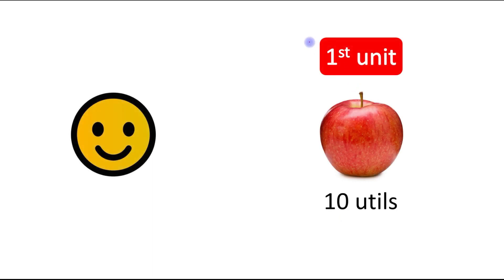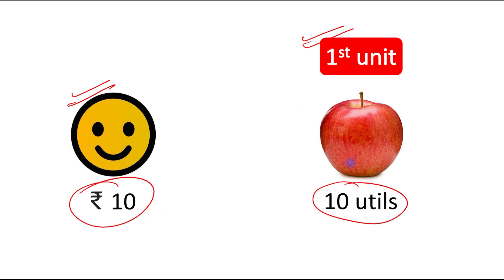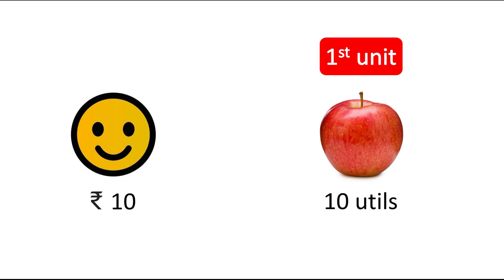When the consumer consumes the first unit of apple, he gets a satisfaction of 10 utils — he is very happy. Because he is getting a satisfaction of 10 utils, he is ready to pay rupees 10 for this first unit of apple.